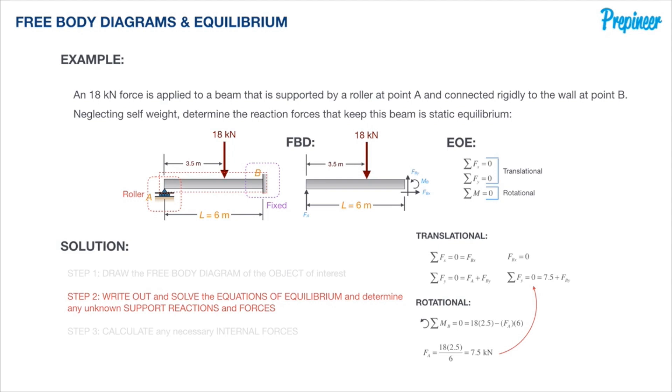We get 7.5 kilonewtons—that is the correct reaction. Plugging that into the F sub y equation gives 10.5. So the correct answers are F sub A is 7.5 kilonewtons and F sub B is 10.5 kilonewtons.